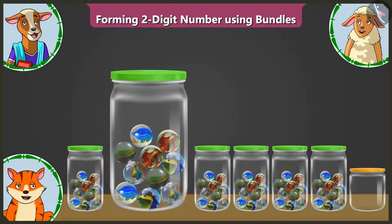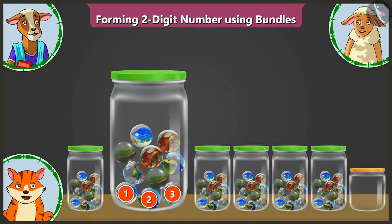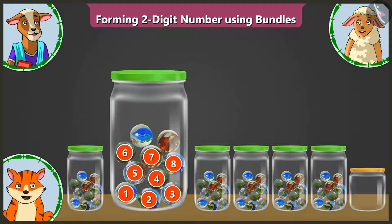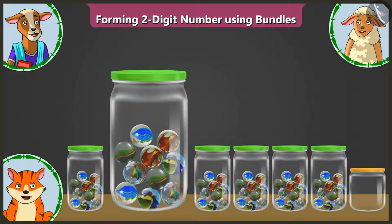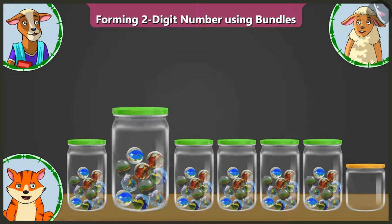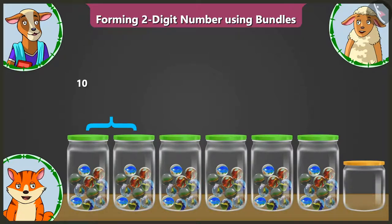Billy, you count the marbles in the second jar. Yes, ma'am. In the second jar, there are 1, 2, 3, 4, 5, 6, 7, 8, 9 and 10 marbles. Yes, that is correct. So there are 10 and 10, 20 — two groups of 10s.